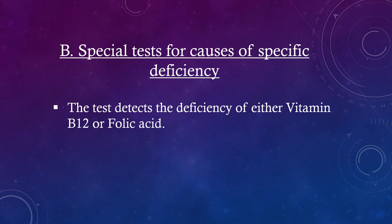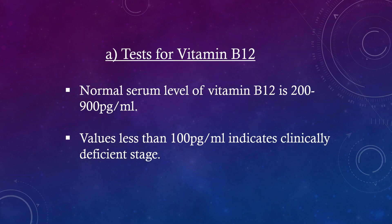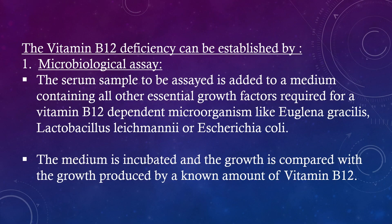Special tests for causes of specific deficiency detect either vitamin B12 or folic acid deficiency. Test for vitamin B12: Normal serum level is 200–900 pg/mL; values less than 100 pg/mL indicate a clinically deficient stage. Vitamin B12 deficiency can be established by microbiological assay, where the serum sample is added to a medium containing all other essential growth factors for a vitamin B12-dependent microorganism such as Euglena gracilis, Lactobacillus leichmannii, or Escherichia coli. The medium is incubated and growth is compared with that produced by a known amount of vitamin B12.